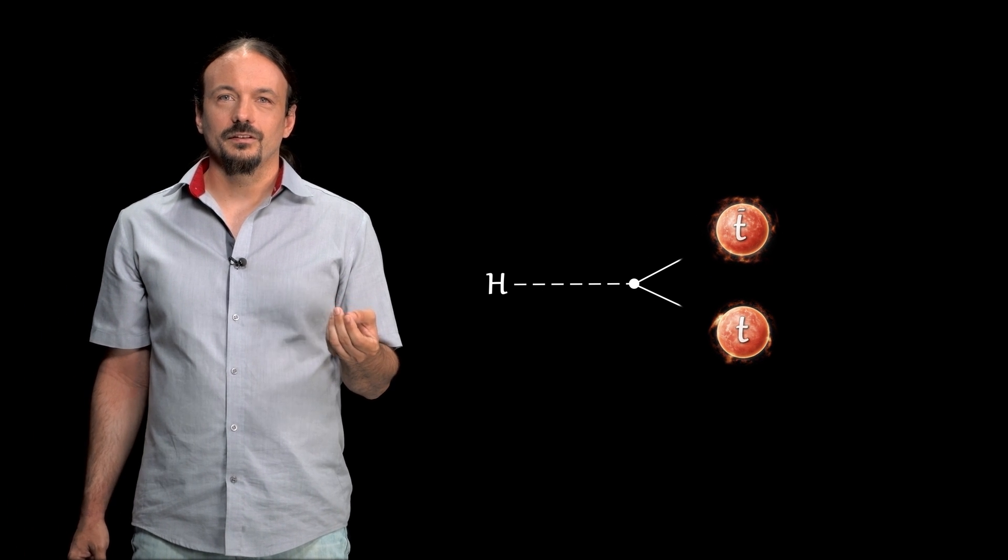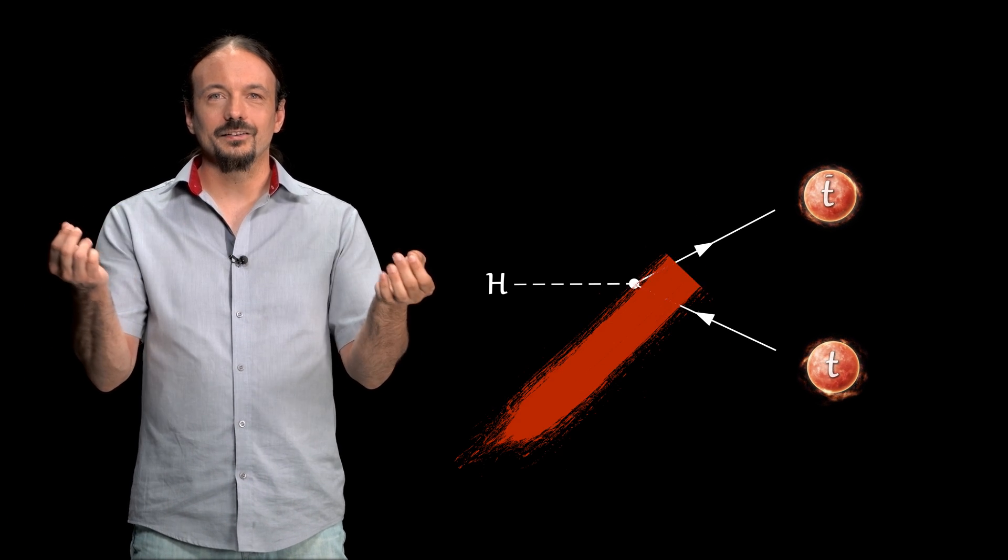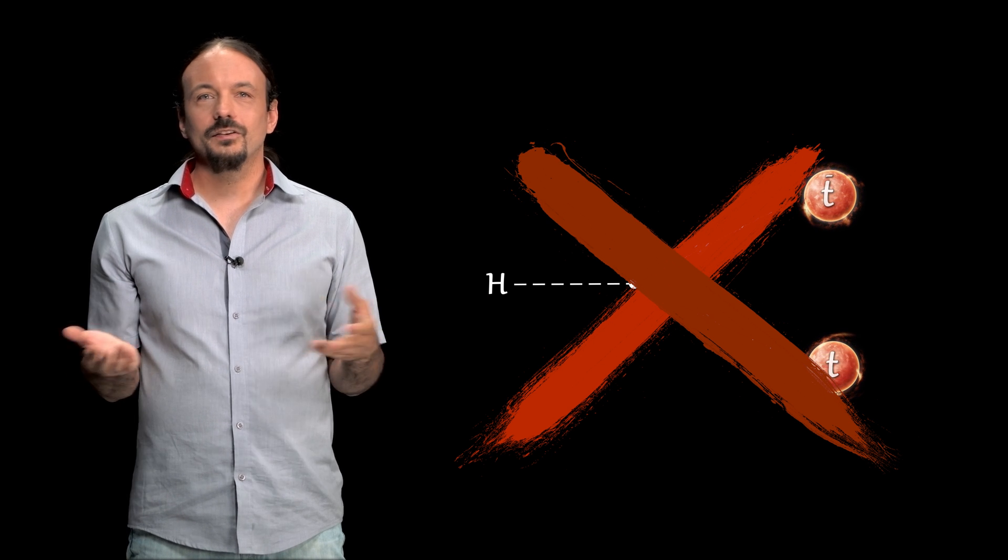Even a single top quark is almost 50% heavier than the Higgs boson. So the decay into a top quark pair is not possible. You cannot have something lighter disintegrate into something heavier. So how can we probe the coupling then?